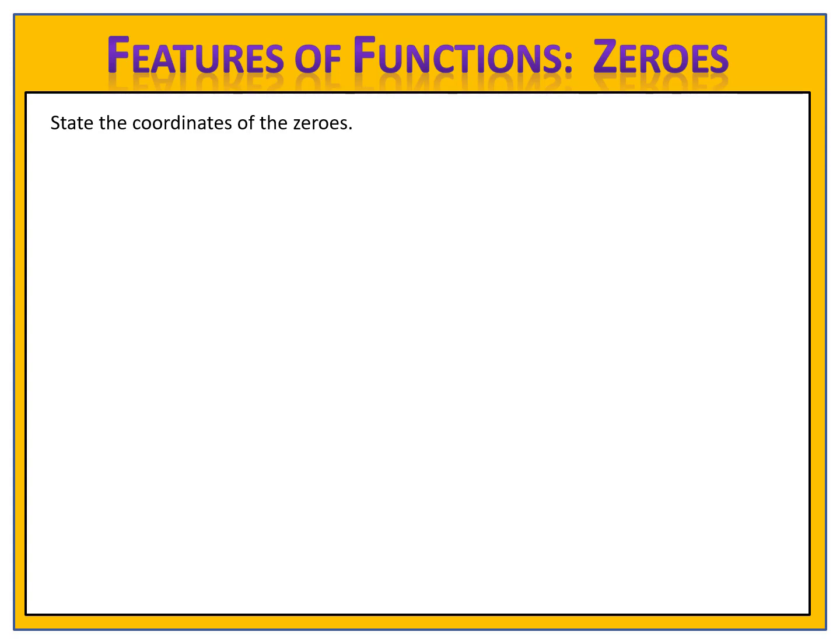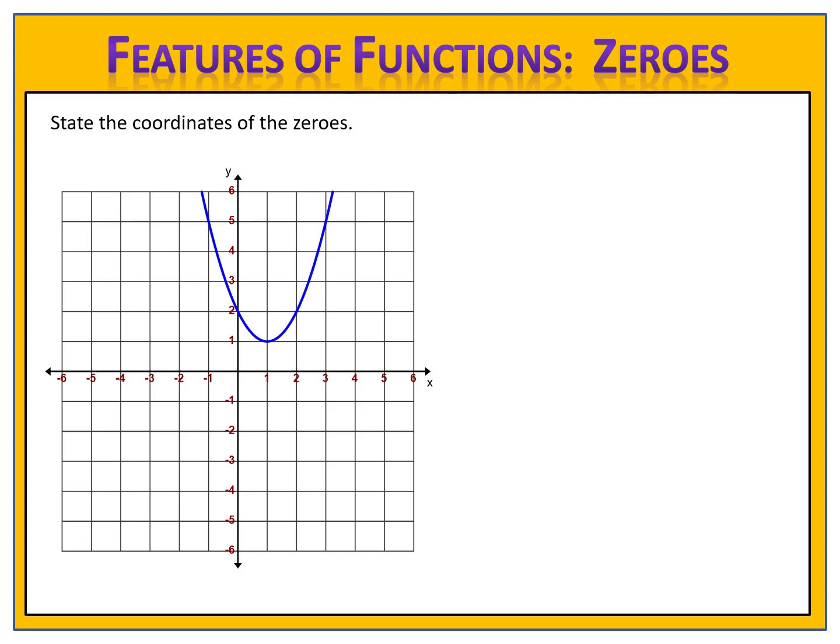Let's try one more. Here's the graph of a function — can you identify the coordinates of the zeros? We look along the x-axis and notice that there are no points of intersection. That means there are no values where the function outputs a zero. Therefore, this function has no zeros.